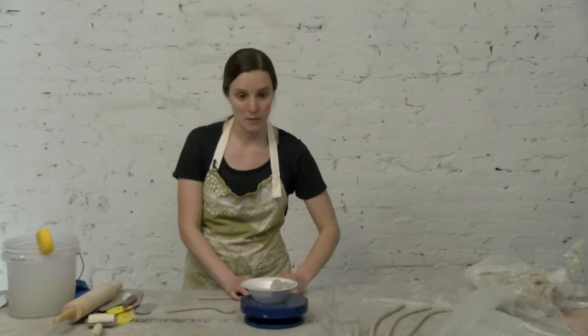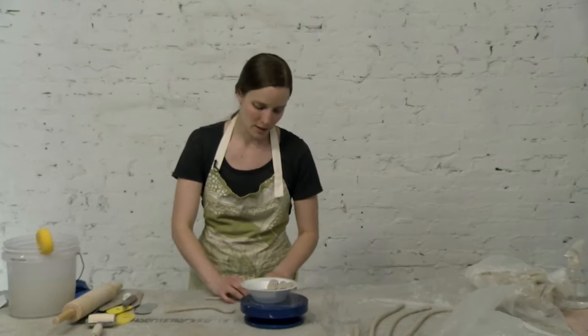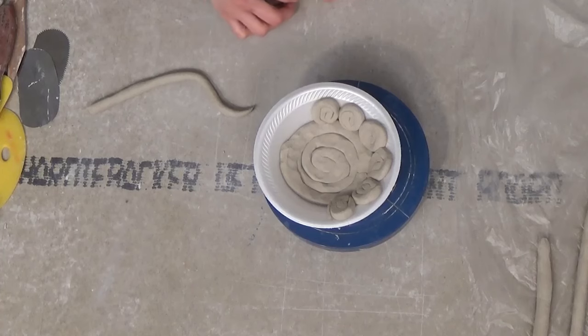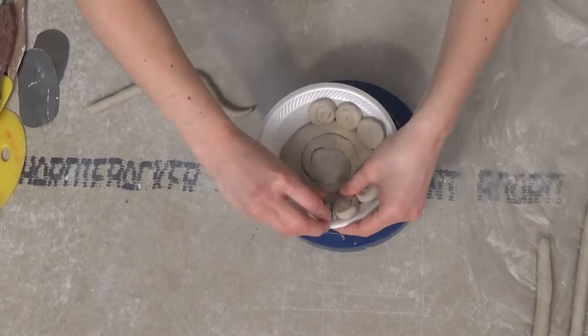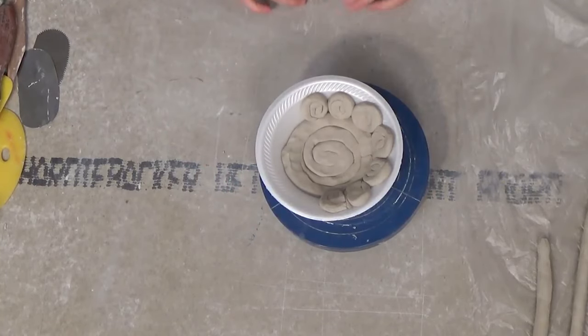Then I'm going to leave it in the mold to dry and the exterior will have this really nice coil pattern on it. As I'm doing this I'm compressing everything, and I'm actually going to go back after I'm done and smooth it out even more.